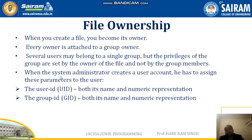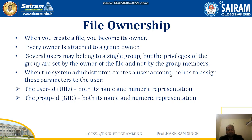When the system administrator creates a user account, they assign certain parameters to the user. If you are logging into the Unix operating system, the system administrator will set up your account with two IDs: first is UID, which is the User ID, and second is GID, which is the Group ID.